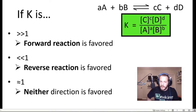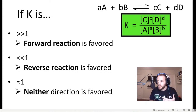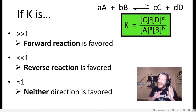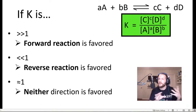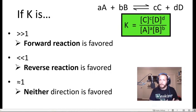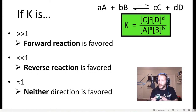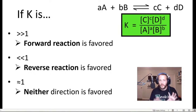Equilibrium does not say anything — I repeat, does not say anything — about how fast the reaction occurs. That was chemical kinetics. Kinetics is associated with how fast the reaction occurs. The equilibrium constant only tells us how far the reaction has proceeded once the rate of the forward and reverse reactions are the same.